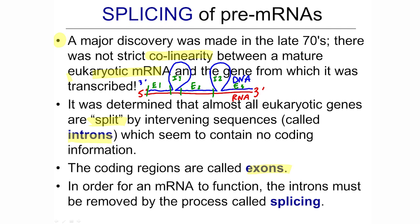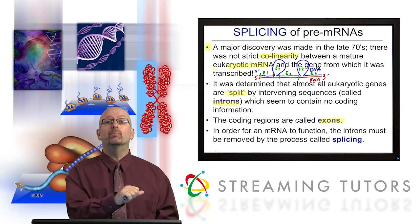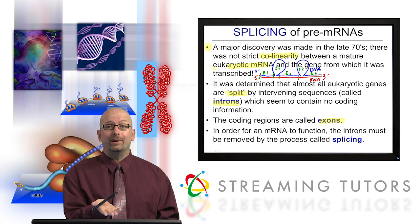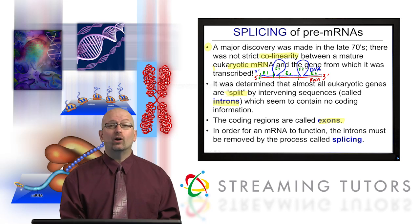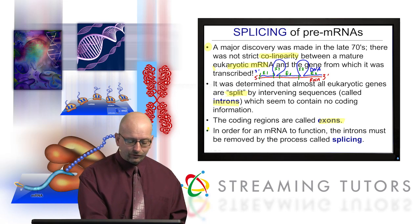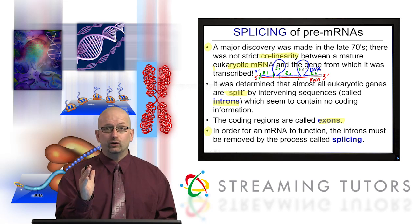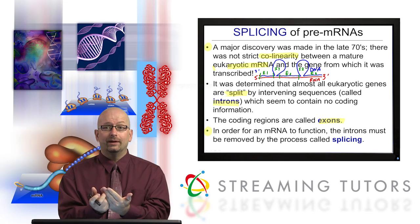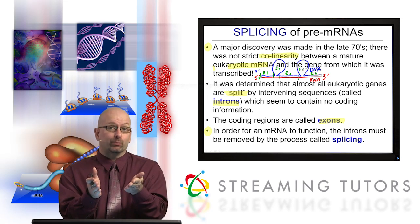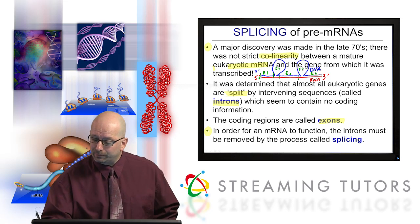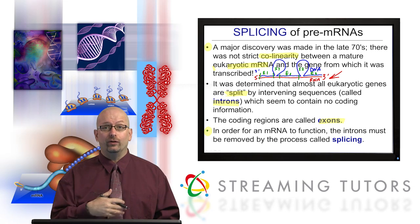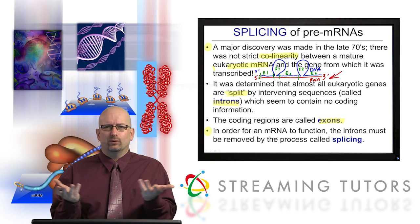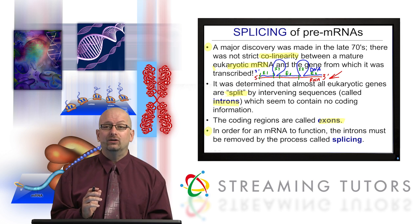Technically, the term intron is reserved for the material present in the pre-mRNA before it gets spliced — that's the intron. In DNA, you probably should call it an intervening sequence. In order for the mRNA to function, the introns have to be removed by the process called splicing. In the pre-mRNA, the introns are copied but have to be spliced out before you get a mature RNA.